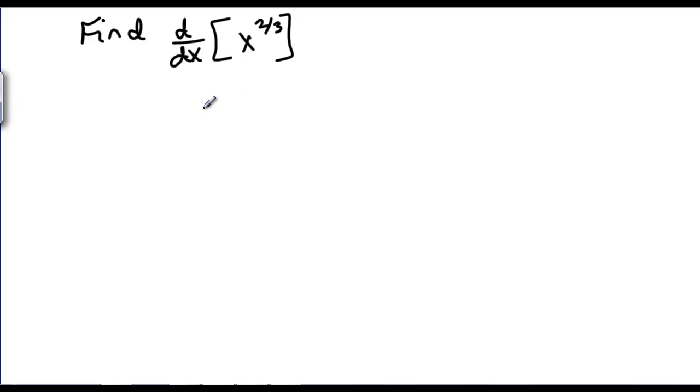It turns out we can actually use implicit differentiation because if we write X to the 2/3 as Y equals X to the 2/3, and then we write Y equals the cubed root of X squared, remember that the 1/3 power is the same as the cubed root, then we can actually cube both sides of this equation and get Y cubed equals X squared.